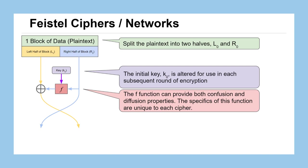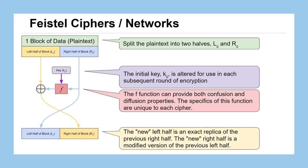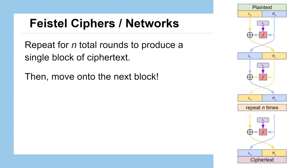We take the output of that XOR function and the untouched right half of the block, swap them, and they become the left half and right half of the new block of information. The new left half is an exact replica of the previous right half, and the new right half is that modified version of the previous left half. If we did this one time we'd consider that our ciphertext; if we do this multiple times, we have what we call a Feistel network, repeating the process N times. By the time we have L sub N and R sub N together, that's our ciphertext.